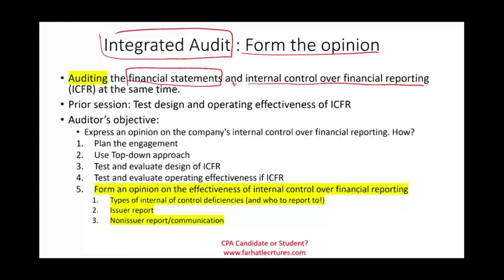In the prior session we went through steps on how to get to the opinion: plan the engagement, use a top-down approach, test the design, test the operating effectiveness of internal control over financial reporting, then form an opinion. We also looked at the different types of internal control deficiencies and who we communicate those deficiencies to. At this point we are ready to communicate the end product — the report.